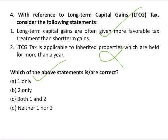Any profit or gain arising from the sale of a capital asset is a capital gain. This gain comes under the category of income, so capital gains tax is required to be paid for that amount in the year in which the transfer of capital assets takes place. Long-term capital gains tax is a levy on profits from the sale of assets held for more than a year, whereas short-term capital gains tax applies to assets held for a year or less and is taxed as ordinary income.